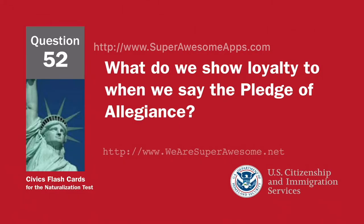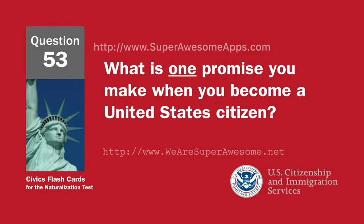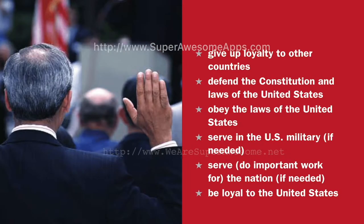What do we show loyalty to when we say the Pledge of Allegiance? The United States. The flag. What is one promise you make when you become a United States citizen? Give up loyalty to other countries. Defend the Constitution and laws of the United States. Obey the laws of the United States. Serve in the U.S. military if needed. Serve, do important work for, the nation if needed. Be loyal to the United States.